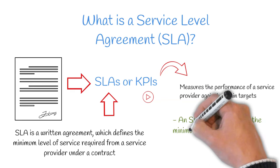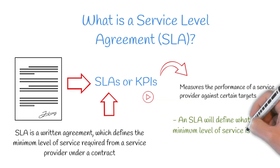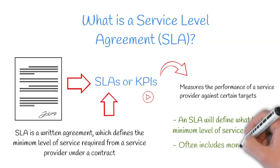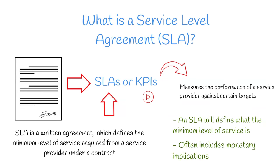An SLA will define what the minimum level of service is, and provide a course of action for when this level of service is not met. This often includes monetary implications, aiming to reimburse the client for some or all of the loss incurred as a result of underperformance. SLAs are monitored regularly, ensuring performance is tracked and corrective action is promptly taken when measurement thresholds are exceeded.